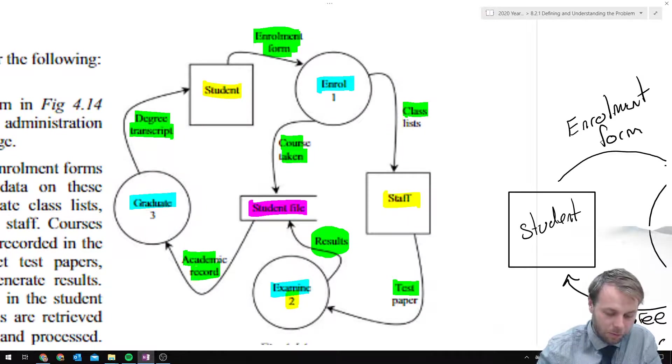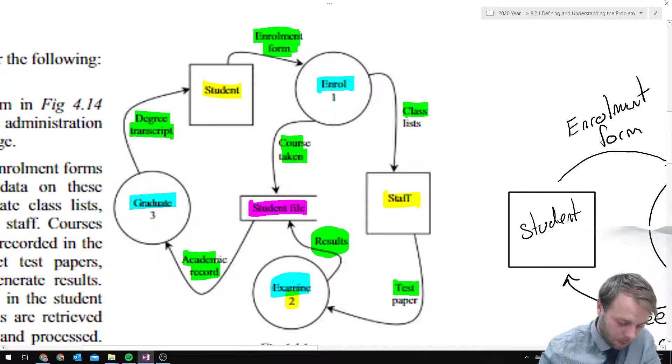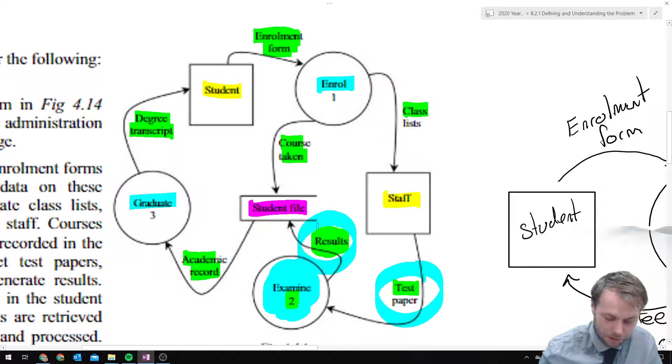What we want to have a look at is how we can refine the examine 2 process, which is down the bottom here. How can we refine this one down and add a bit more detail to it, so we can further get closer to the stage we're ready to start coding the solution? We can see coming into it is the test paper and leaving it is the results, so we'll need to pay attention to those two and make sure we include them on our level 2 data flow diagram.